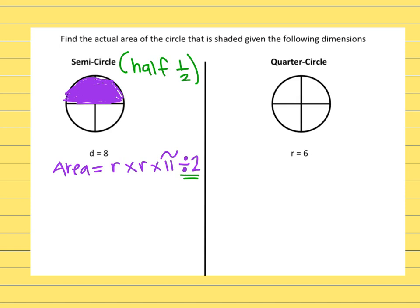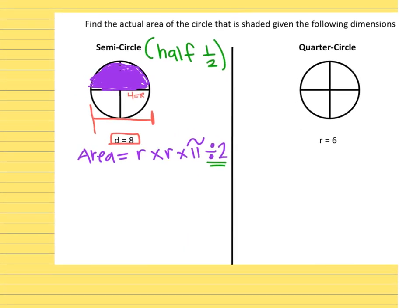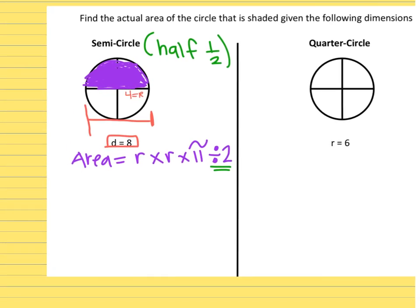Underneath the picture it says the diameter is 8. The diameter goes all the way from one side to another, but the formula needs the radius, which is only halfway across. Half of 8 is 4, so the radius is 4. Now I'm going to plug that into the equation: 4 times 4 times 3.14, then divide by 2.